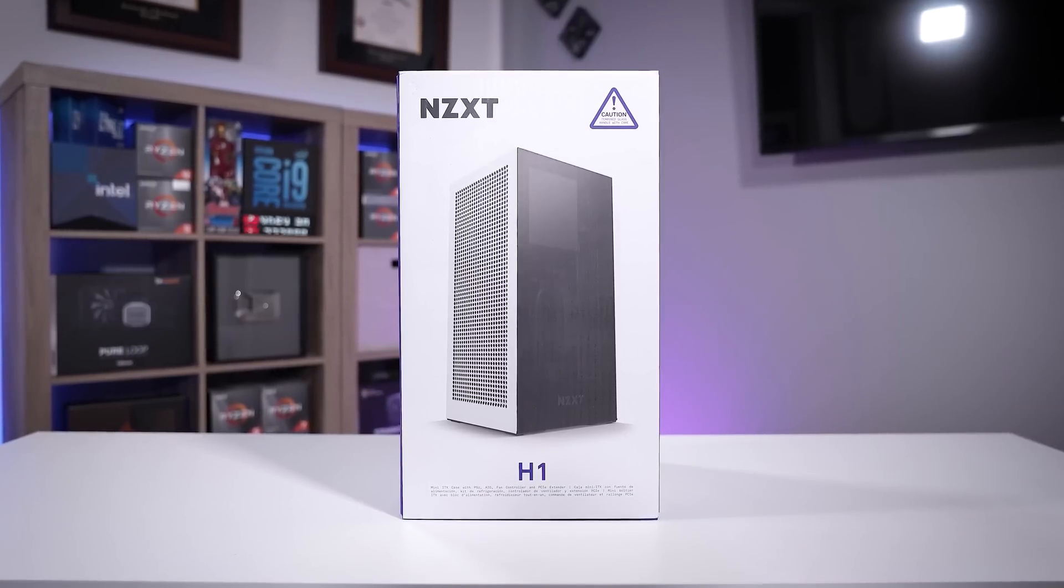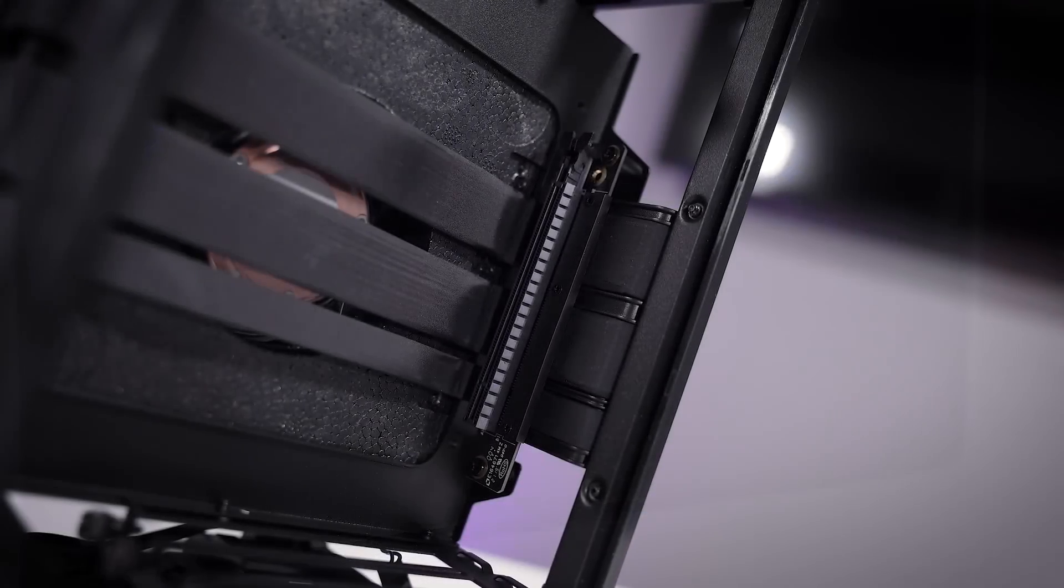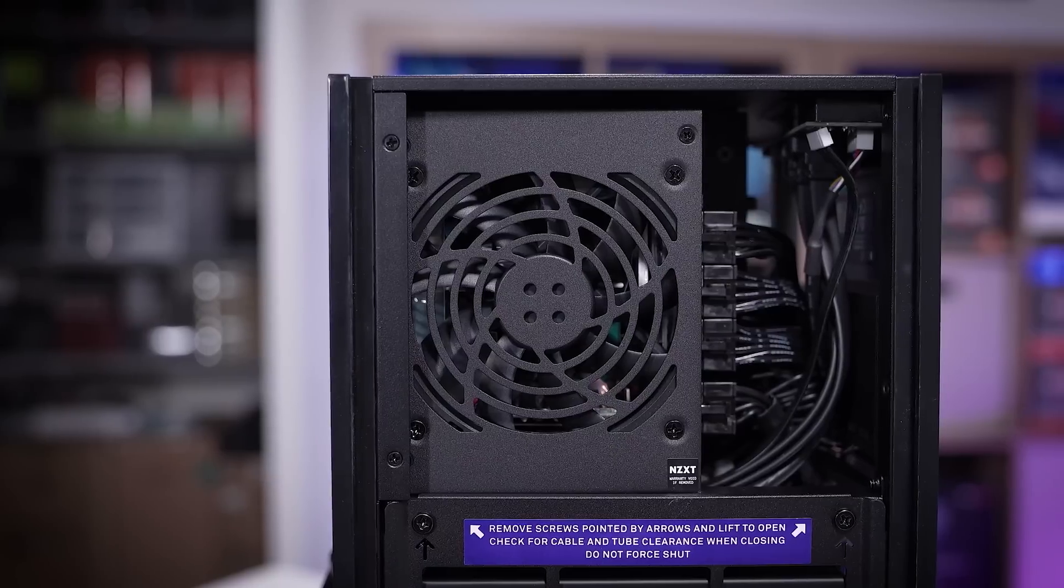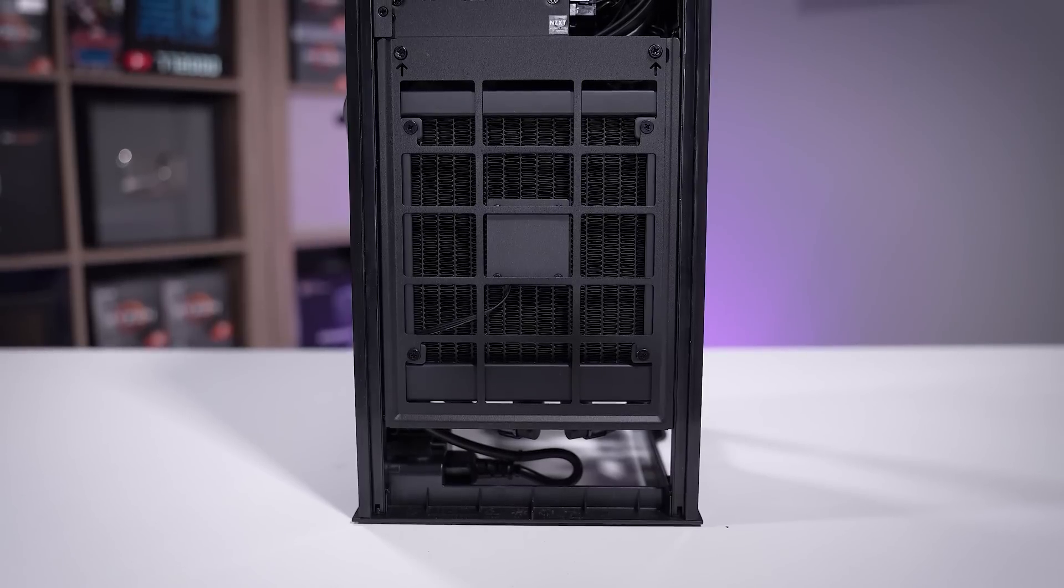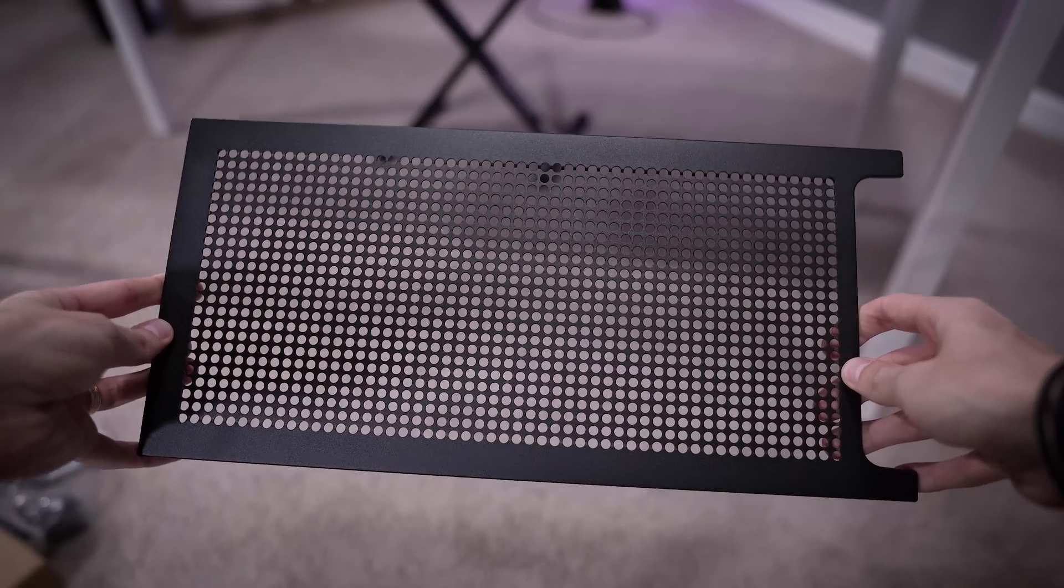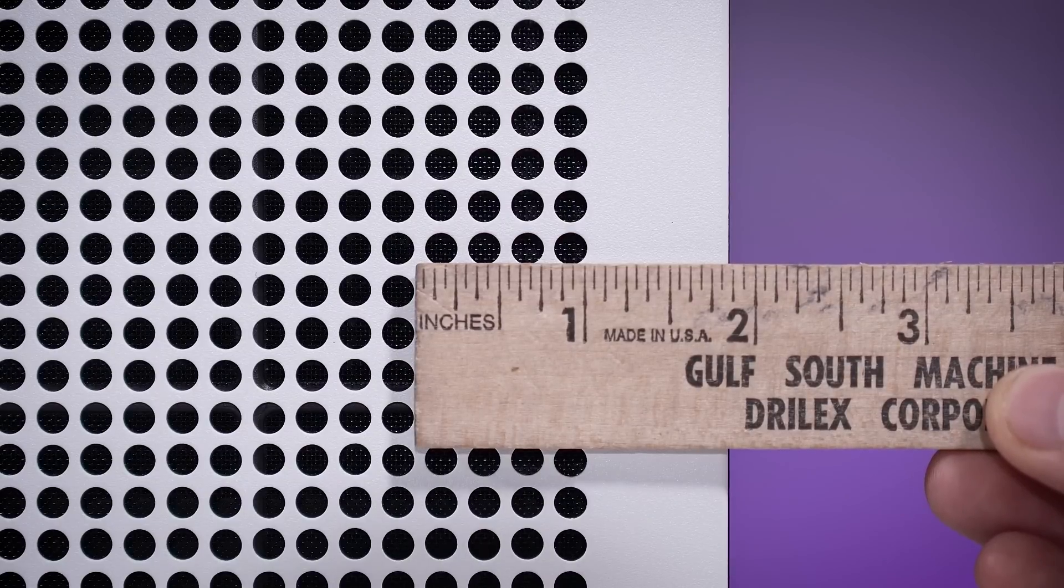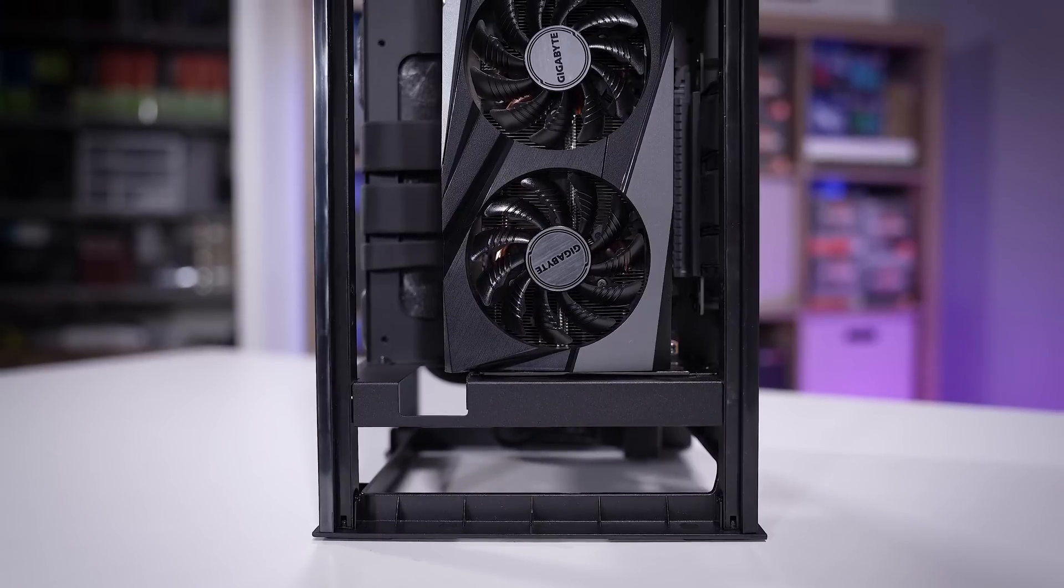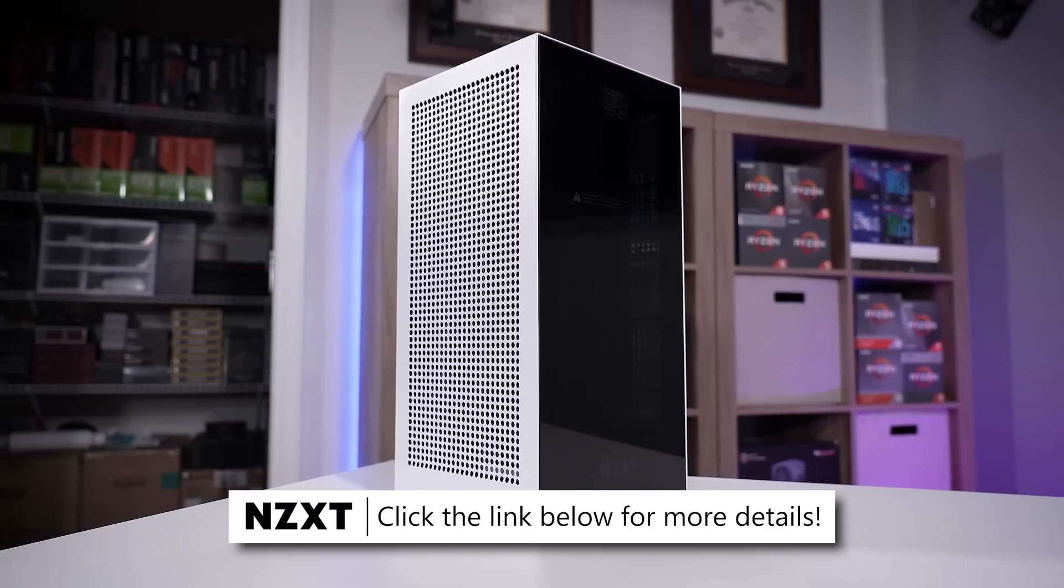Meet NZXT's new and improved H1. It's a compact ITX chassis packed full of features. You'll find tool-less panels and SSD trays, a PCIe 4.0 compatible riser cable, an integrated 750 watt SFX gold power supply, and a 140 millimeter all-in-one liquid cooler. It's practically half a PC build. Just throw in your platform and graphics card. NZXT has addressed cooling concerns with its previous model as well by opening this new version up a bit more, providing more airflow for larger graphics cards. Perforations around the case are also larger, and a 92 millimeter exhaust fan has been included for extra ventilation. If you're looking for something powerfully small and elegant, consider the new NZXT H1. Learn more by clicking the link below.